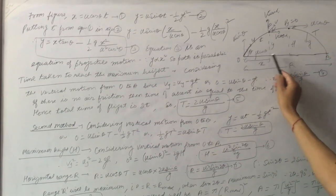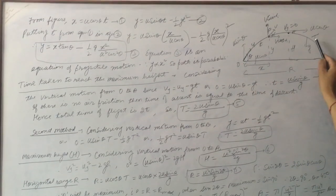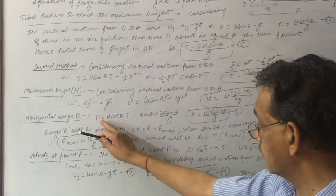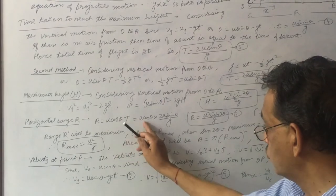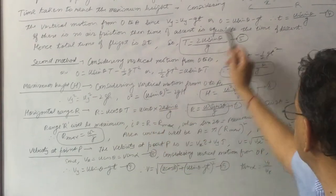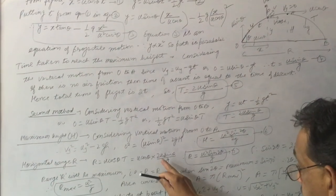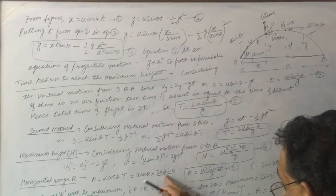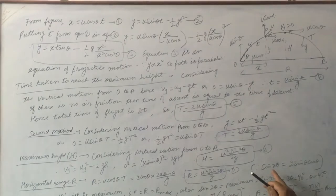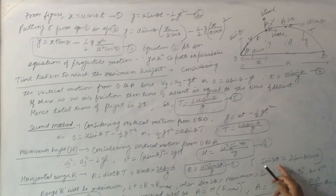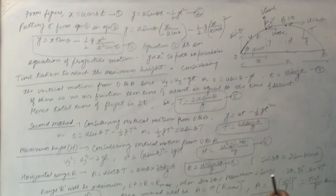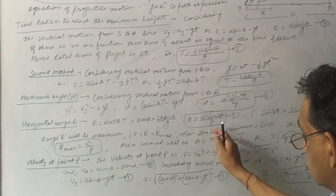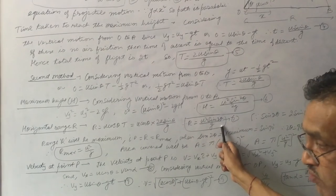Horizontal range: since u cos θ remains constant, range R = velocity × time of flight = u cos θ × (2u sin θ / g) = u² sin 2θ / g, using the identity sin 2θ = 2 sin θ cos θ. This is the standard range formula.